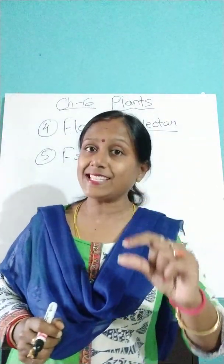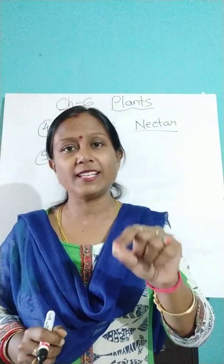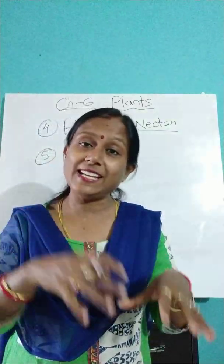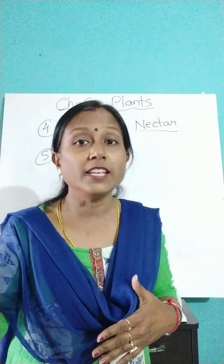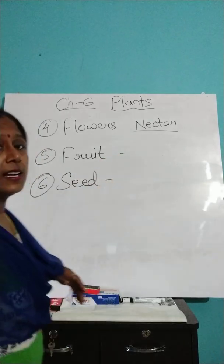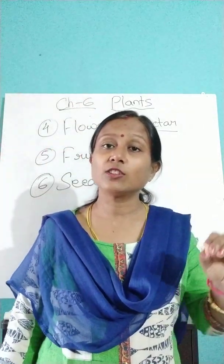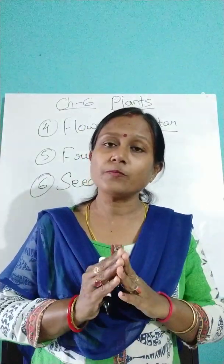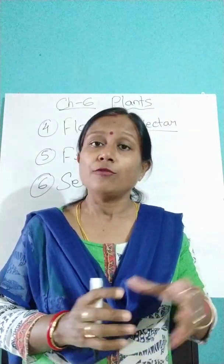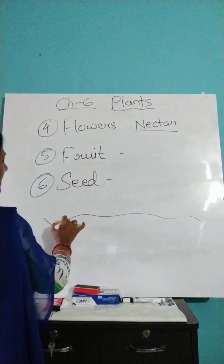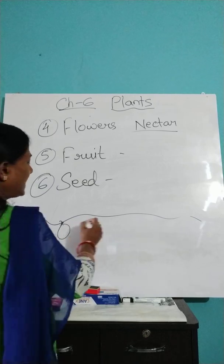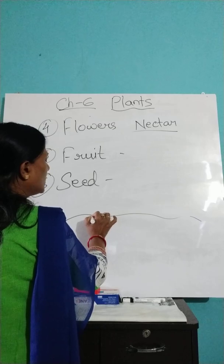These seeds, when they remain inside the fruit, develop by taking the nutritious material and start growing. When these seeds are sown in soil, after getting the proper amount of favorable conditions, the seed coat breaks and it turns into a seedling.